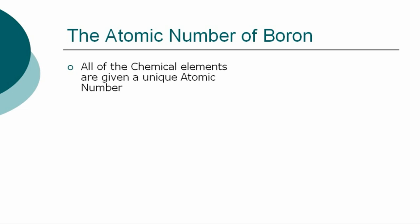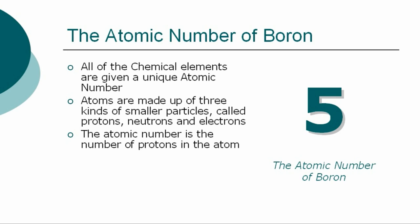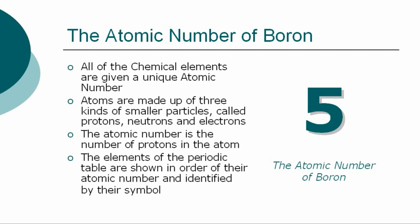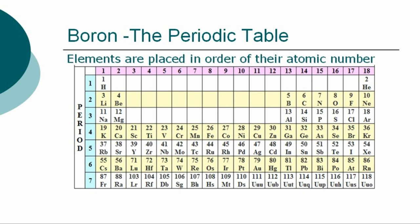All of the chemical elements are given a unique atomic number. The atomic number for boron is 5. Atoms are made up of three kinds of smaller particles called protons, neutrons, and electrons. The atomic number is the number of protons in the atom. The chemical elements of the periodic table are shown in order of atomic number and identified by their symbol. The periodic table is a chart showing the symbols and the atomic numbers of all known elements, such as boron, in one large grid.